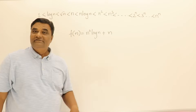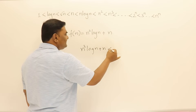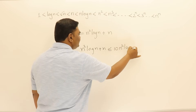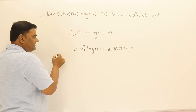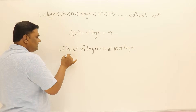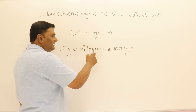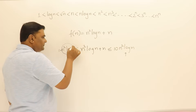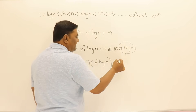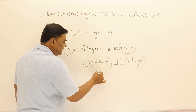Next, if f(n) = n²·log(n) + n, then n²·log(n) + n is less than or equal to 10·n²·log(n), and also greater than or equal to 1·n²·log(n). So on both sides we get n²·log(n), making this function Big-O of n²·log(n) and Omega of n²·log(n) as well.